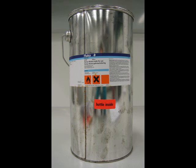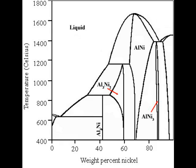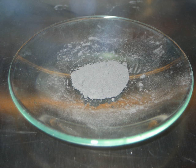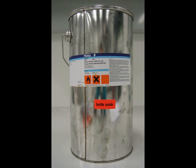Raney Nickel is produced when a block of nickel-aluminum alloy is treated with concentrated sodium hydroxide. This treatment, called activation, dissolves most of the aluminum out of the alloy, leaving behind a porous nickel framework. As a result, activated Raney Nickel has a large surface area, which results in increased catalytic activity. A typical catalyst is around 85% nickel by mass, corresponding to about two atoms of nickel for every atom of aluminum.